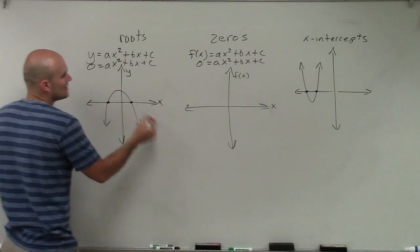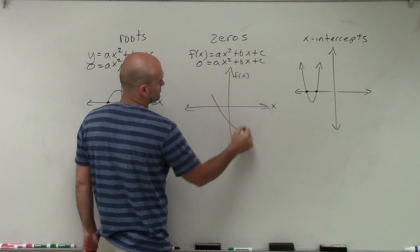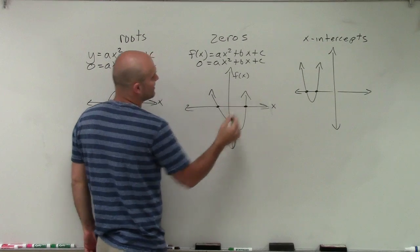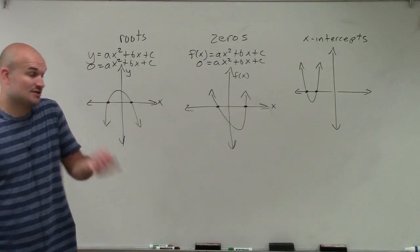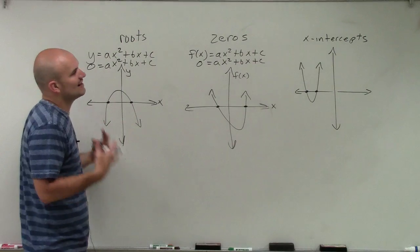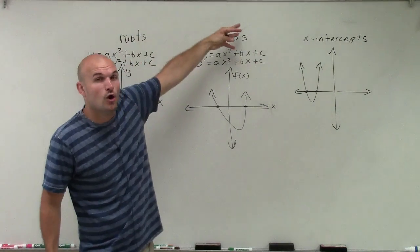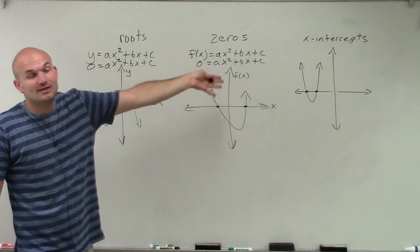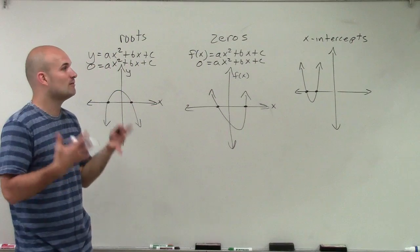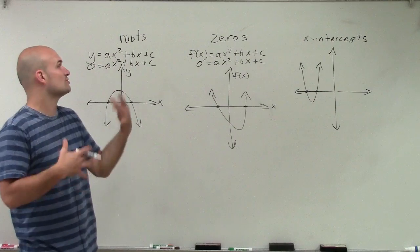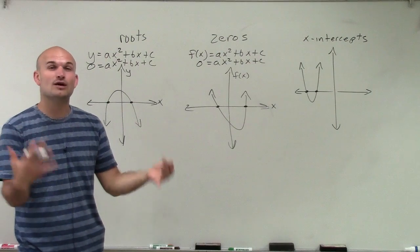Since they're all quadratics, we're going to have two x-intercepts, no x-intercepts, or one x-intercept. We're going to be using the same processes. It just depends if we're dealing with an equation, a function, or just looking at a graph - that determines what we call them: x-intercepts, zeros, or roots. It depends on what kind of question we're given.